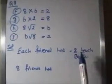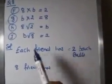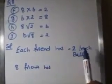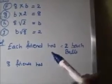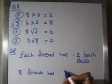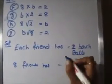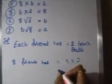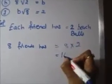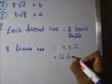The solution: each friend has 2 beach balls. Chris gave 2 balls to each friend. He has 8 friends. So 8 friends have 8 × 2 = 16 balls.